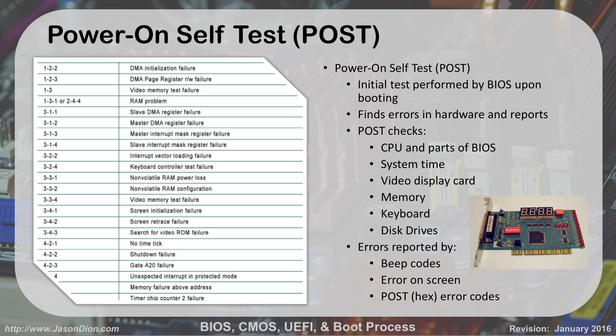The other way — if it got at least as far as the video display card — it can display those errors on the screen and put it in text, like 'error code 38, memory bad.' The third way is it can use what's called a POST error code, written in hexadecimal format. You can use a POST card — power-on self-test card — which you install into one of your PCI-X slots, and on the LCD readout it gives you an error in hexadecimal format. For example, it may say 3-A-2-C, and you'd look that up in the manufacturer's POST code and it would say the video card is bad. The most common are beep codes and errors on the screen, but you could use all three.